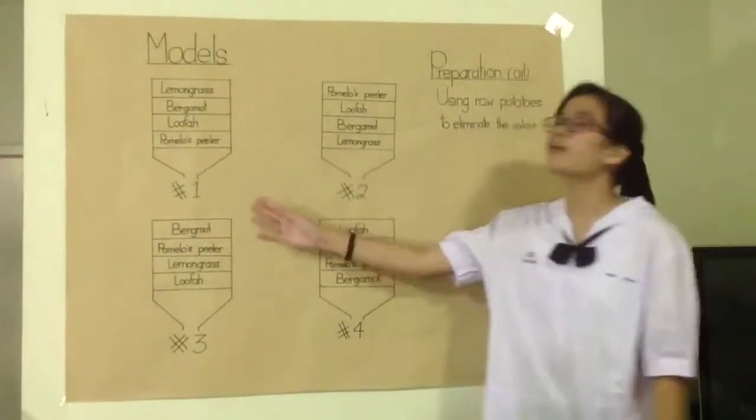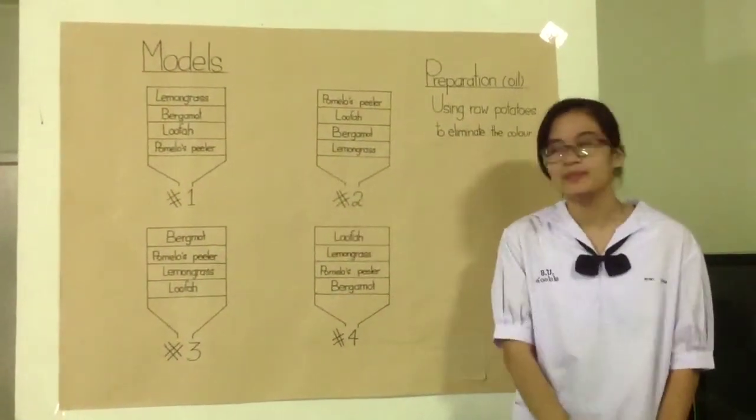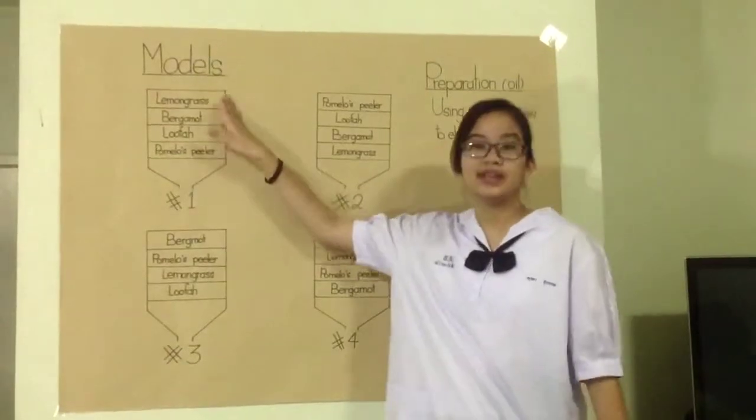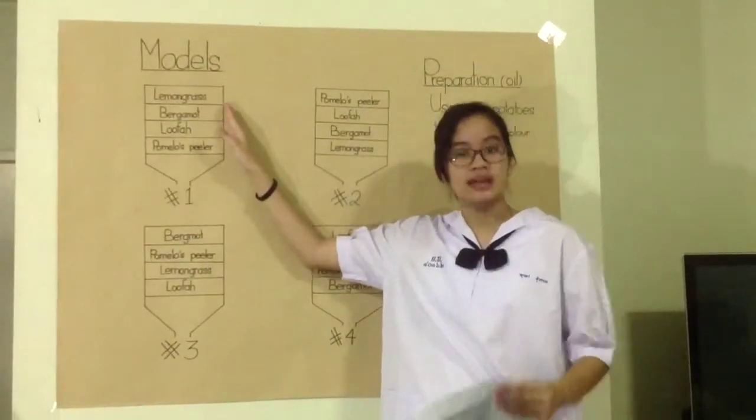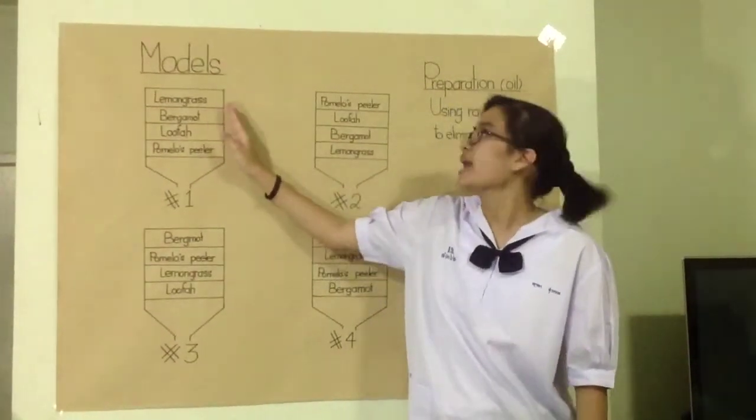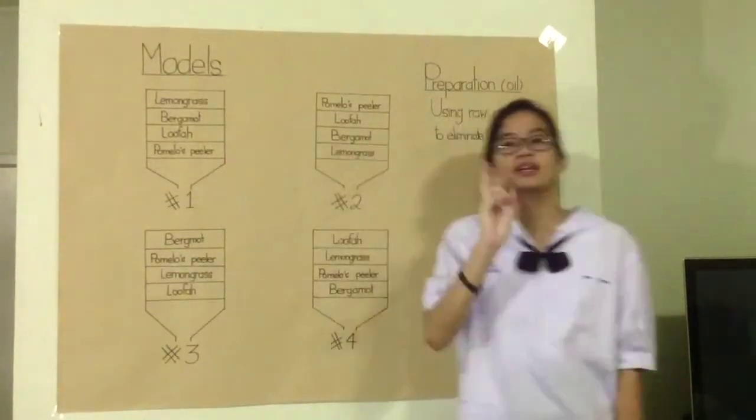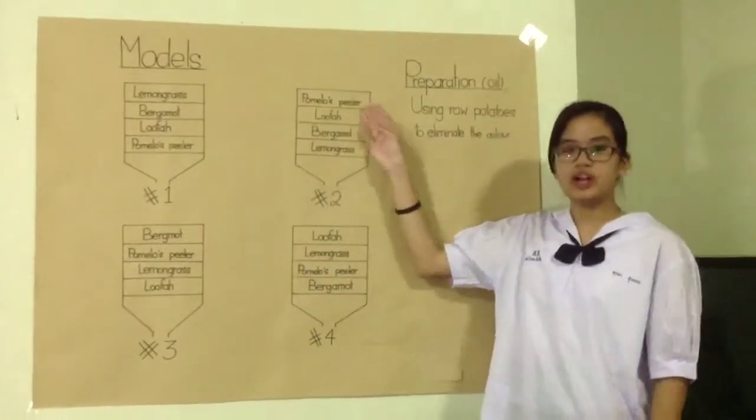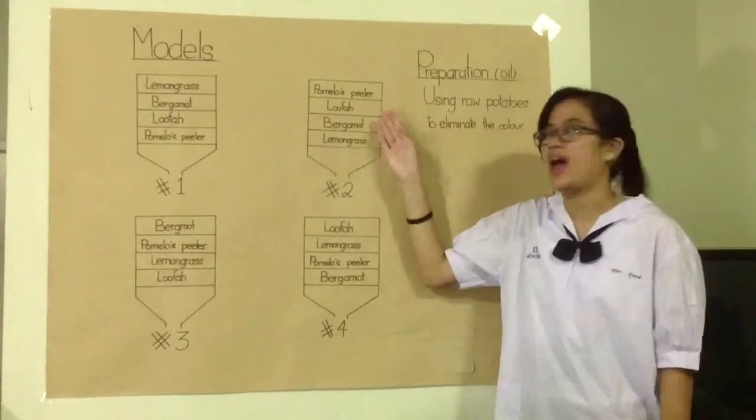These are four of my models in this project. The first one will be in the order of lemongrass, bergamot, luffa, and pomelo's peeler. The second one: pomelo's peeler, luffa, bergamot, and lemongrass.